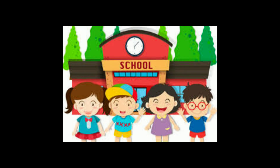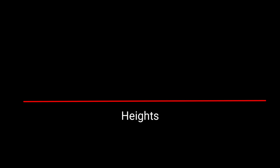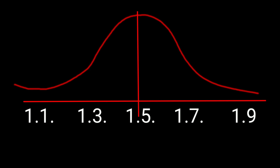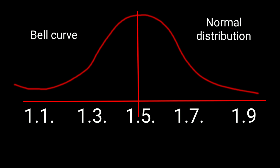For understanding normal distribution, consider noting the heights of a very large set of students at a school. Heights recorded range from 0.9 m to 2.1 m, marked at intervals of 0.2 m: 1.1, 1.3, 1.5, 1.7. The graph shows a maximum at 1.5 m, with values equally distributed on both sides. This type of distribution is called normal distribution, also called a bell curve because its shape resembles a bell.